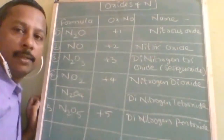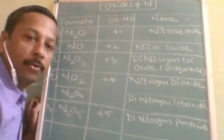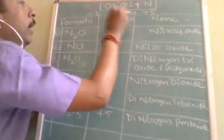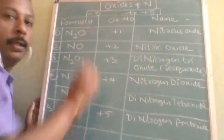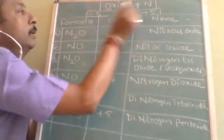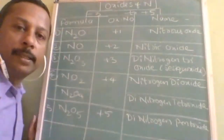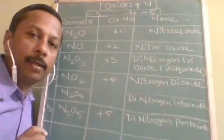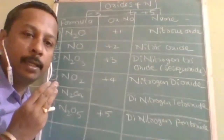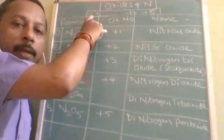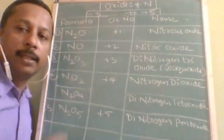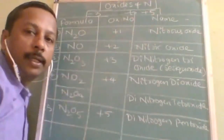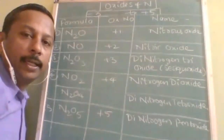So let us start with nitrogen — oxides of nitrogen. Nitrogen is the element which can show oxidation state right from minus 3 to plus 5. Why minus 3? Because nitrogen already has 5 electrons in the valence shell. To gain octet, 3 electrons are required — that's why minus 3. And if it can lose 5 electrons, it can also gain the duplet.